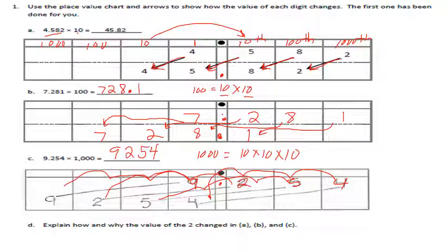On part D, explain how and why the value of the two changed in A, B, and C. In A, it changed one place value because it was only being multiplied by ten. In B, the two moved two place values because it was being multiplied by 100. And in C, the two moved three place values because it was being multiplied by a thousand.